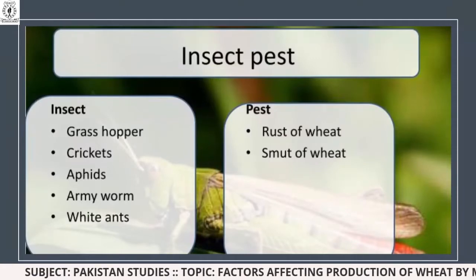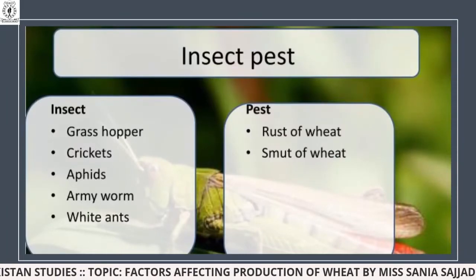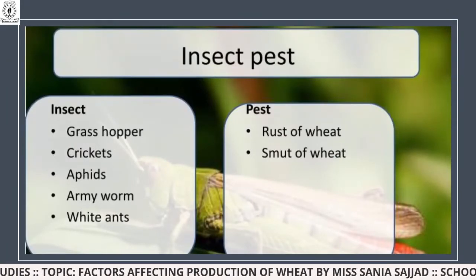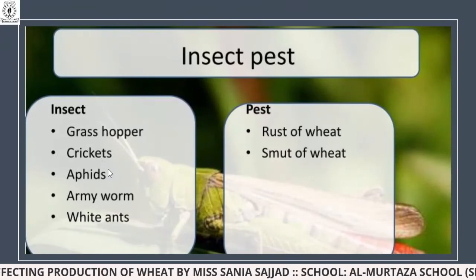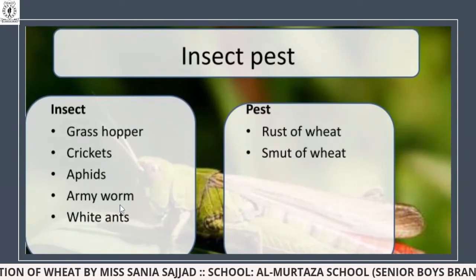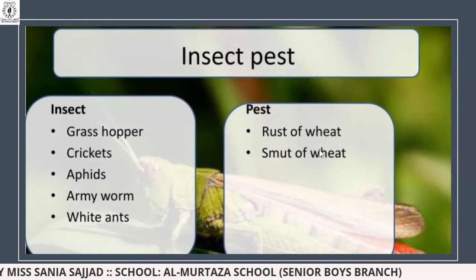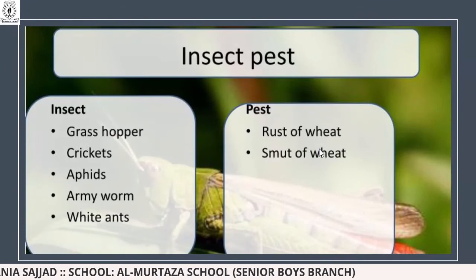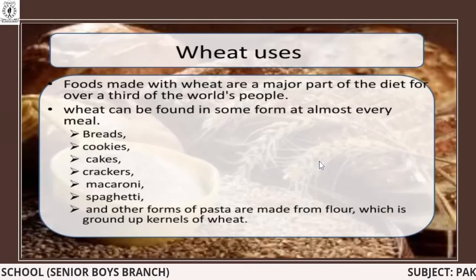The insects and pests which can disturb or destroy wheat crops are: grasshoppers, crickets, aphids, army worms, and white ants. Diseases include rust, smut, and other wheat diseases.